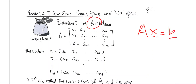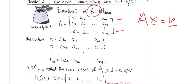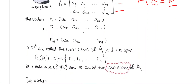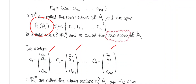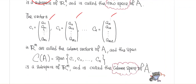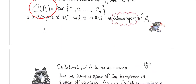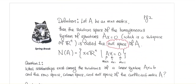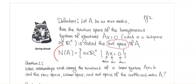So a quick review: the row space, column space, and null space are always associated with a matrix. If you look at all the row vectors and take the linear combinations, that set is known as the row space of A. If you take all the column vectors and look at all their linear combinations, that forms the column space of A. For the null space of A, we take the collection of vectors x that make Ax equal to zero. This is also a vector space, known as the null space of A.